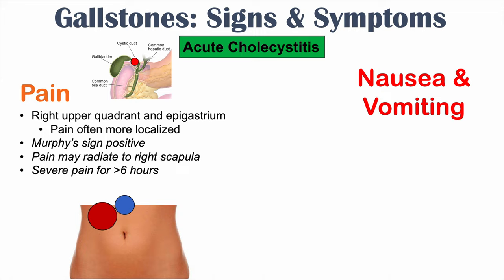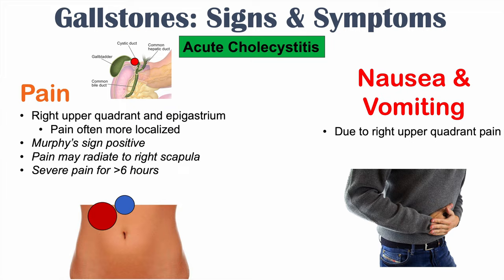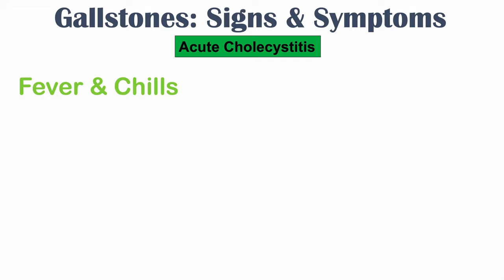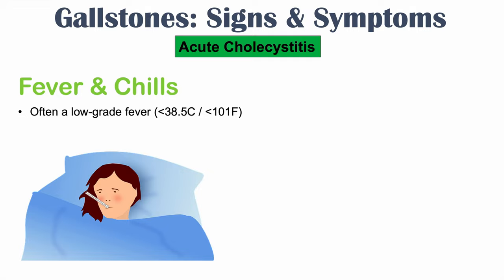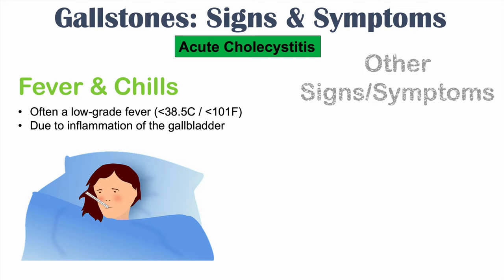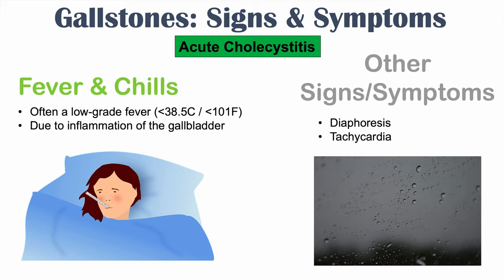Other important signs and symptoms of acute cholecystitis include nausea and vomiting due to the right upper quadrant pain. Fever and chills can also occur — typically a low-grade fever less than 38.5 degrees Celsius or less than 101 Fahrenheit — caused by inflammation of the gallbladder. Even without infection, inflammation alone can generate a fever. Additional signs and symptoms include diaphoresis (sweating) and tachycardia, or a high heart rate, which can result from both the severe pain and the fever and chills.